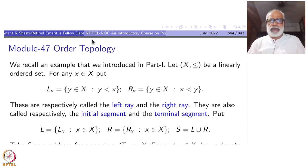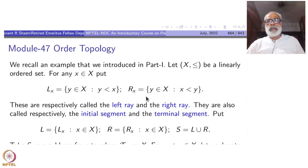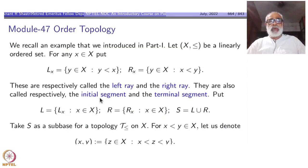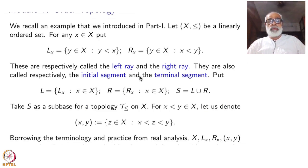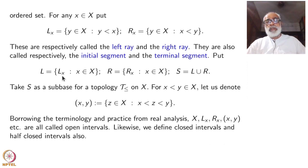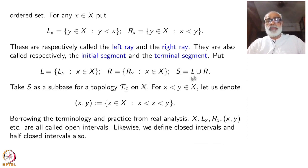Start with a linearly ordered set, or totally ordered set. For any point x in X, let us have the notation: Lx is the left ray — here I am taking open left ray, all y less than or equal to x. Rx is the right open ray, all y bigger than x. These are respectively called left ray and right ray, also called initial segment and terminal segment. Now let L be the family of all left rays, R the family of all right rays, S = L union R. Take this as a sub-base.